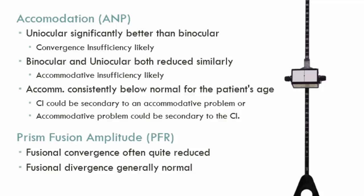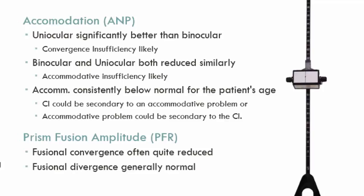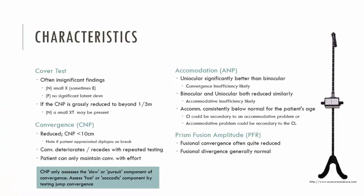Lastly, prism fusion range: patients with CI will often have a reduced fusional convergence compared to their fusional divergence, which is generally normal. The key component in diagnosing CI is assessment of the convergence near point using the RAF gauge, as it provides reliable, repeatable measurements. The cover test, accommodation, and prism fusion range support that finding and assist in determining whether the CI is primary or secondary. Thank you for watching.